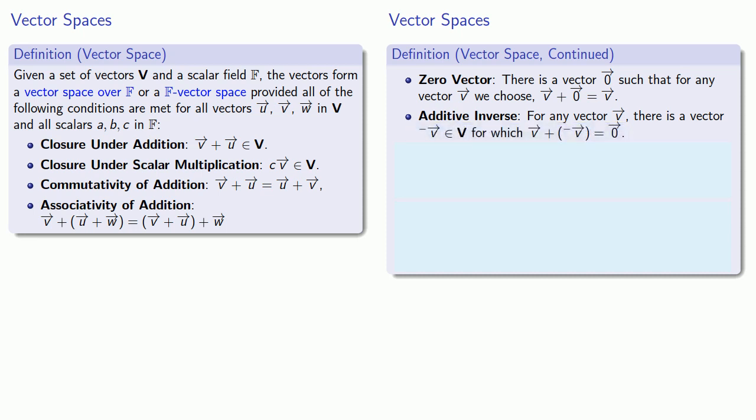Next, while we have defined scalar multiplication by an element of F, we haven't committed ourselves to what happens when you multiply by the scalar one, which is the multiplicative identity in our field. And if we are dealing with a vector space, we do want to require that the scalar multiple one times any vector should give you the vector itself.